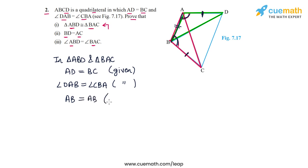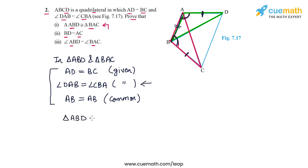We have two corresponding side pairs equal and the included angle pair equal. This means that triangle ABD is congruent to triangle BAC by the SAS congruence criterion. So we have proven that the two triangles are congruent.